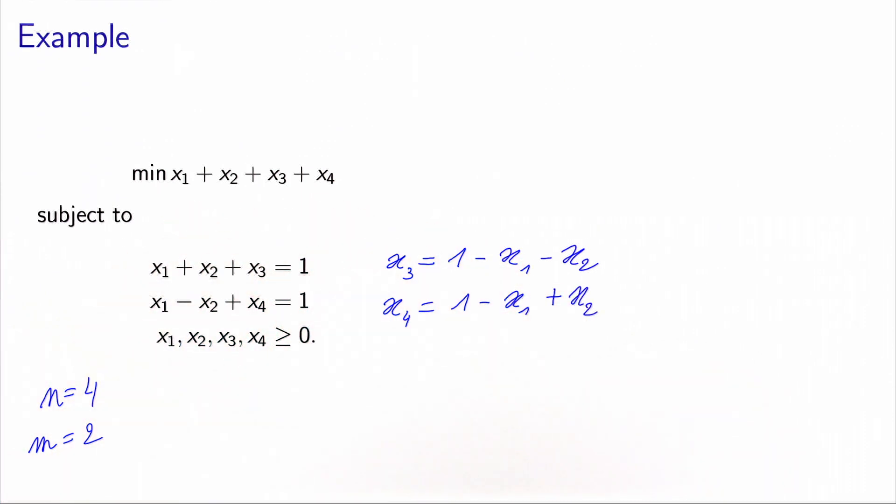Now I can use these constraints to change the value of x3 and x4 in the objective function. So the objective function can be written x1 plus x2 plus x3, which is 1 minus x1 minus x2, plus x4, which is 1 minus x1 plus x2.